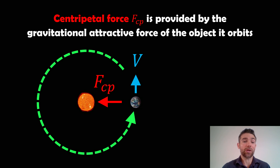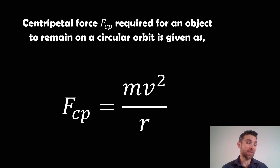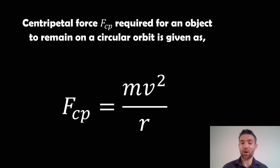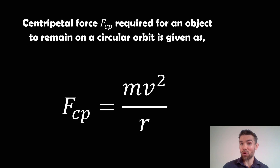So in this case, the centripetal force will be provided by the Sun. The centripetal force required for an object to remain on a circular orbit is equal to the mass of the smaller object — in this case Earth — times the velocity squared, divided by the orbital radius R, or the semi-major axis, which is the same thing for a circular orbit.